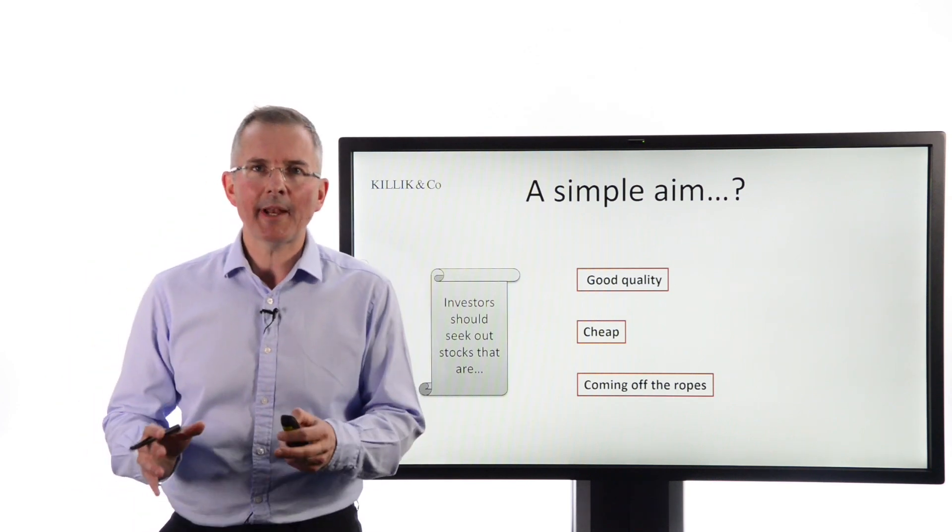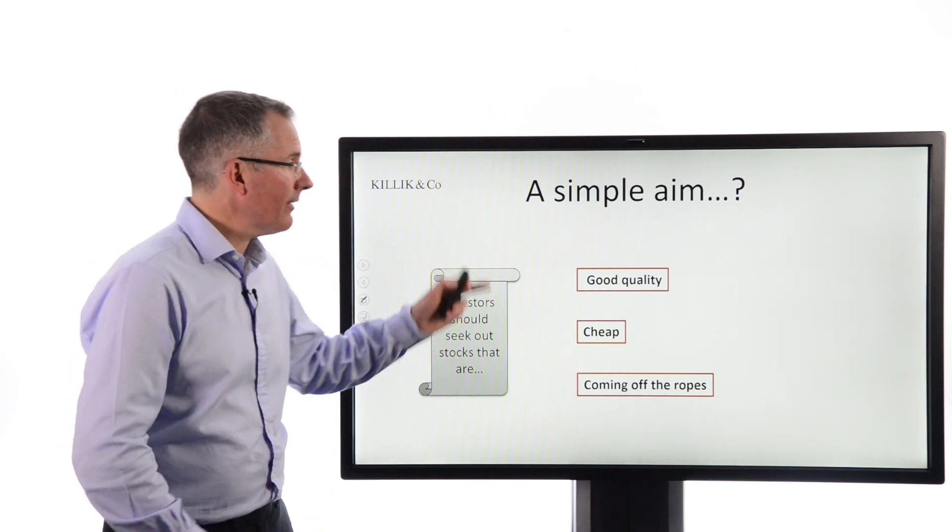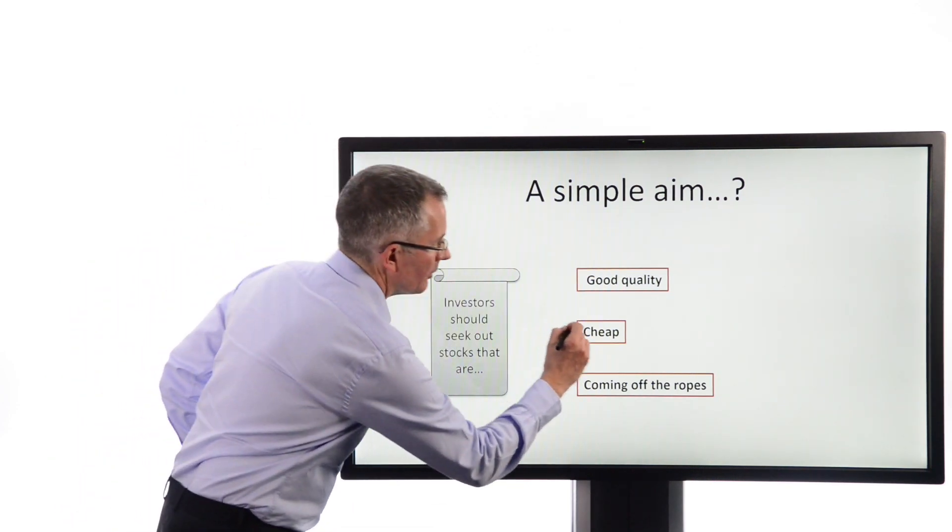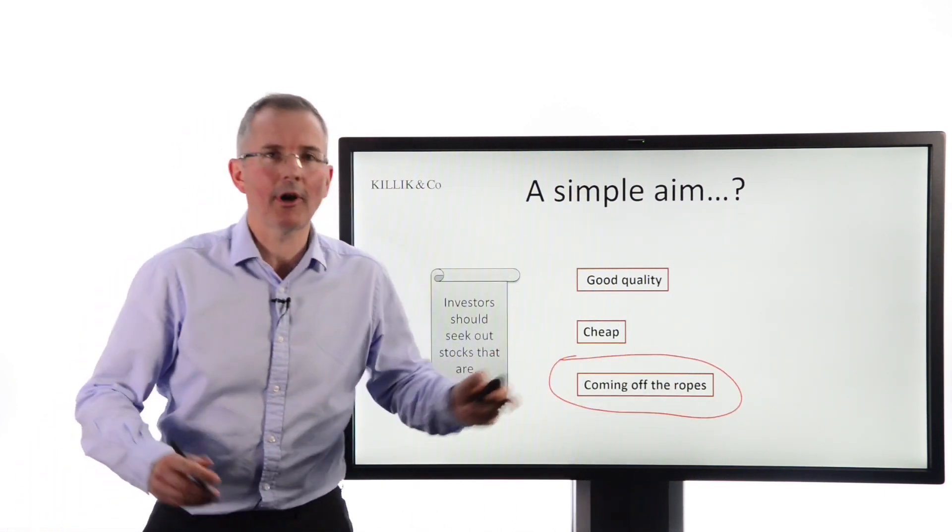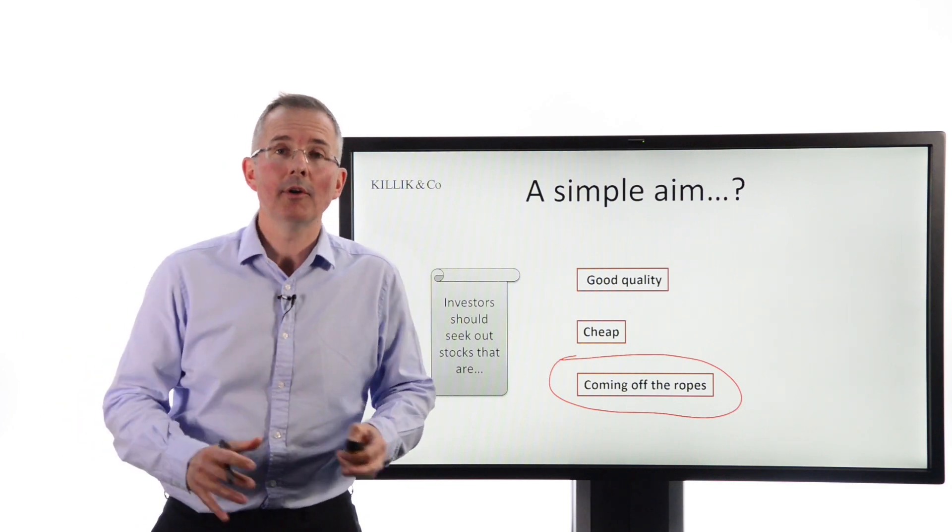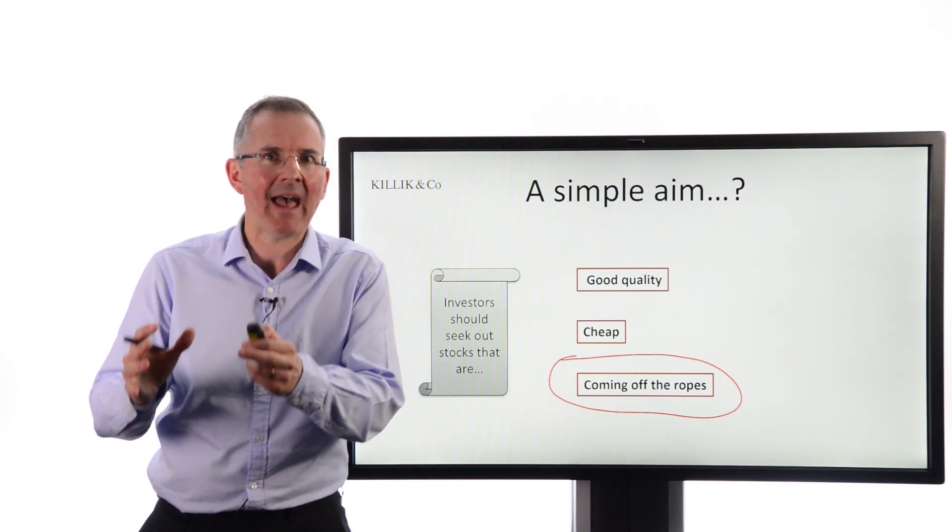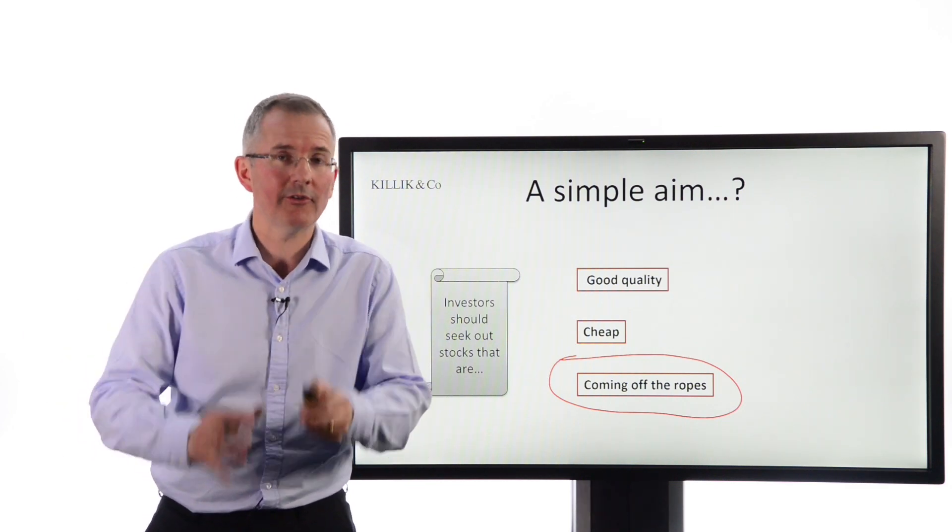Well, value investors set out with a simple enough aim. In theory, they want good quality stocks that are cheap. And I've added one coming off the ropes. So you want good quality stocks at a decent price with the potential to grow. Because remember that cheap stocks can have a habit of getting cheaper. That's not necessarily what we want.